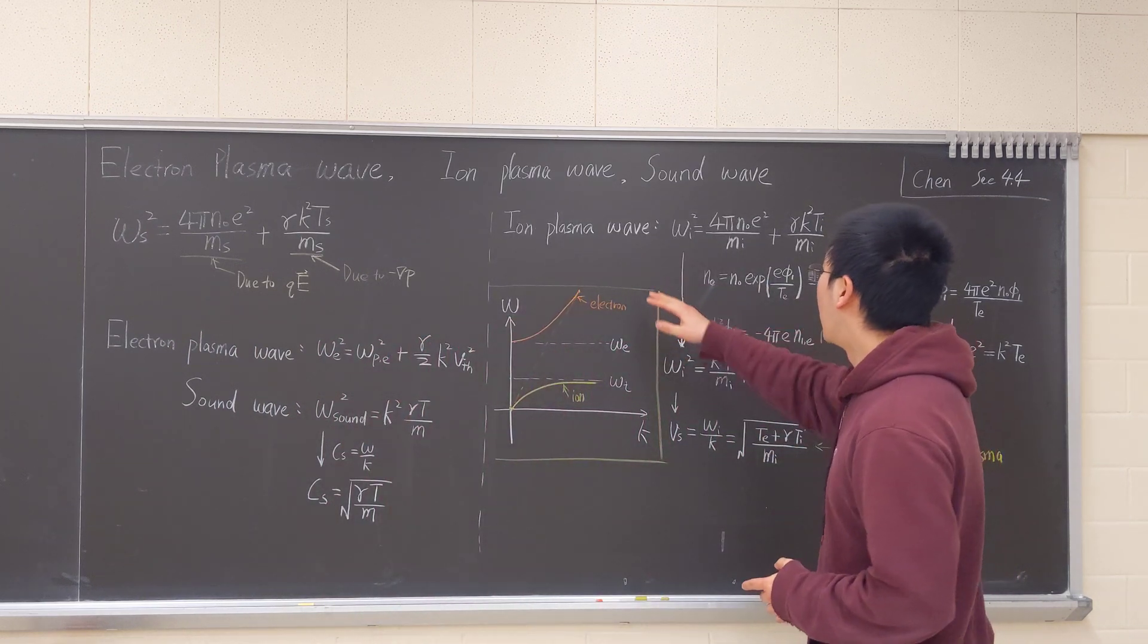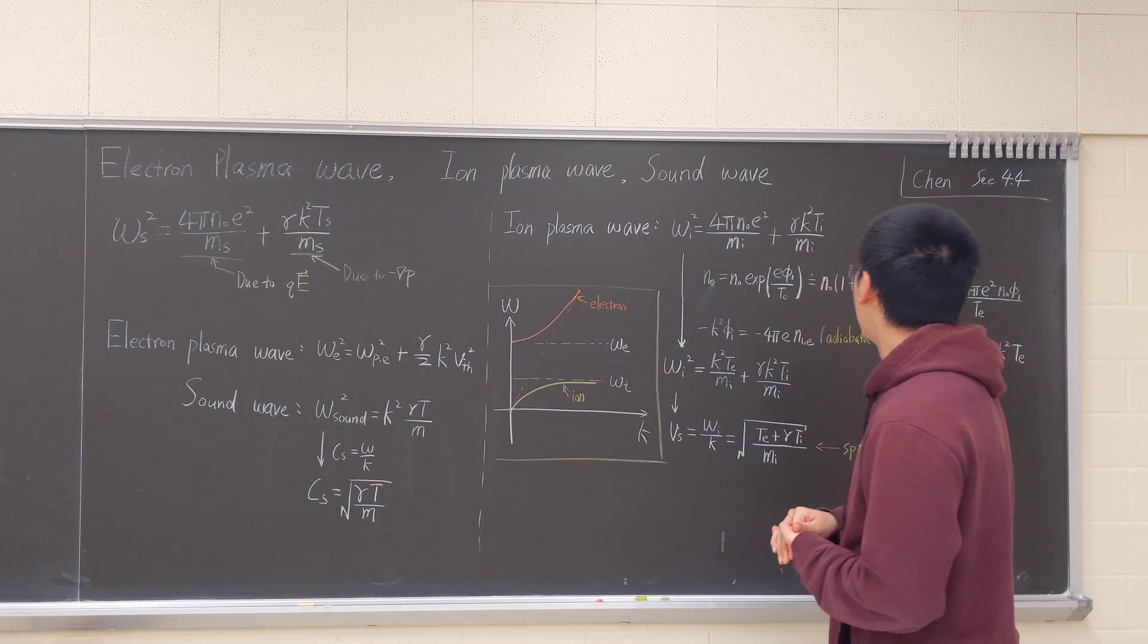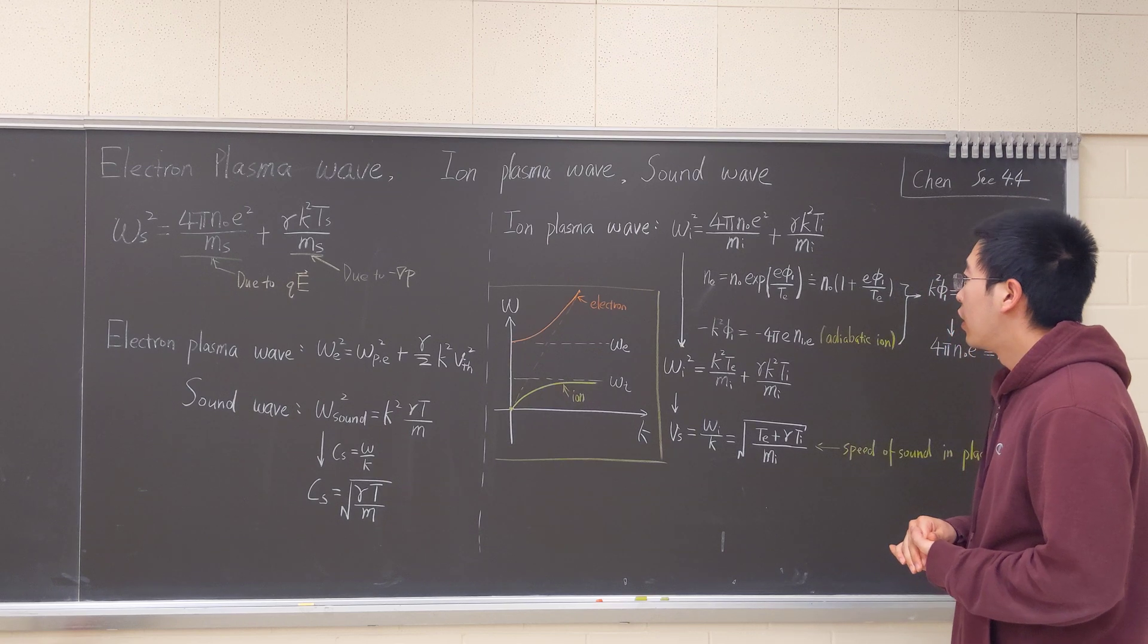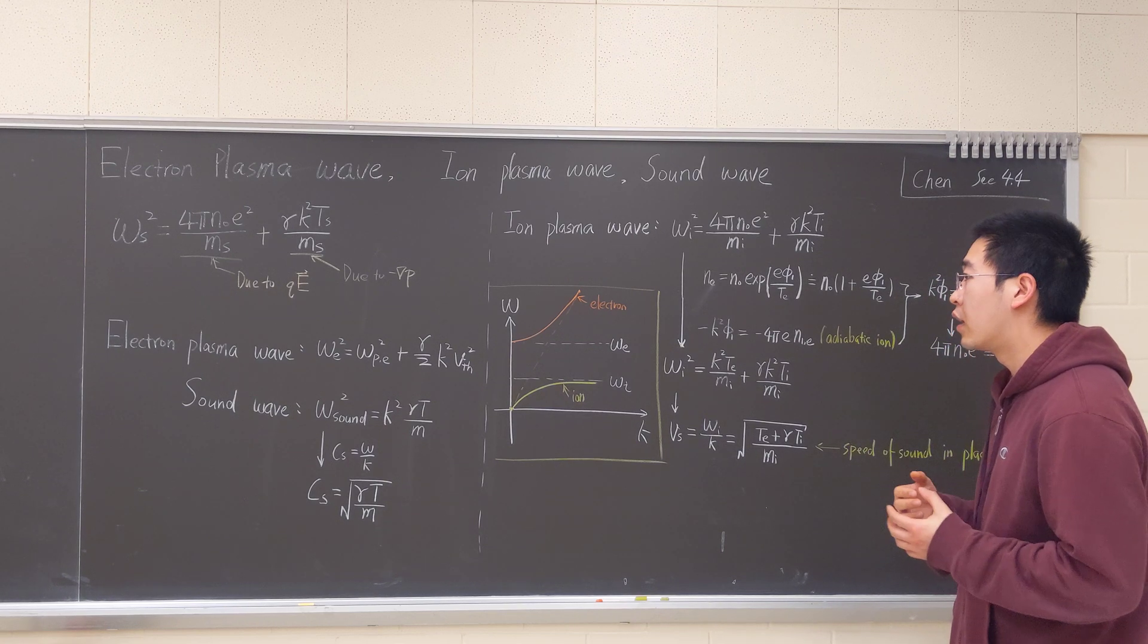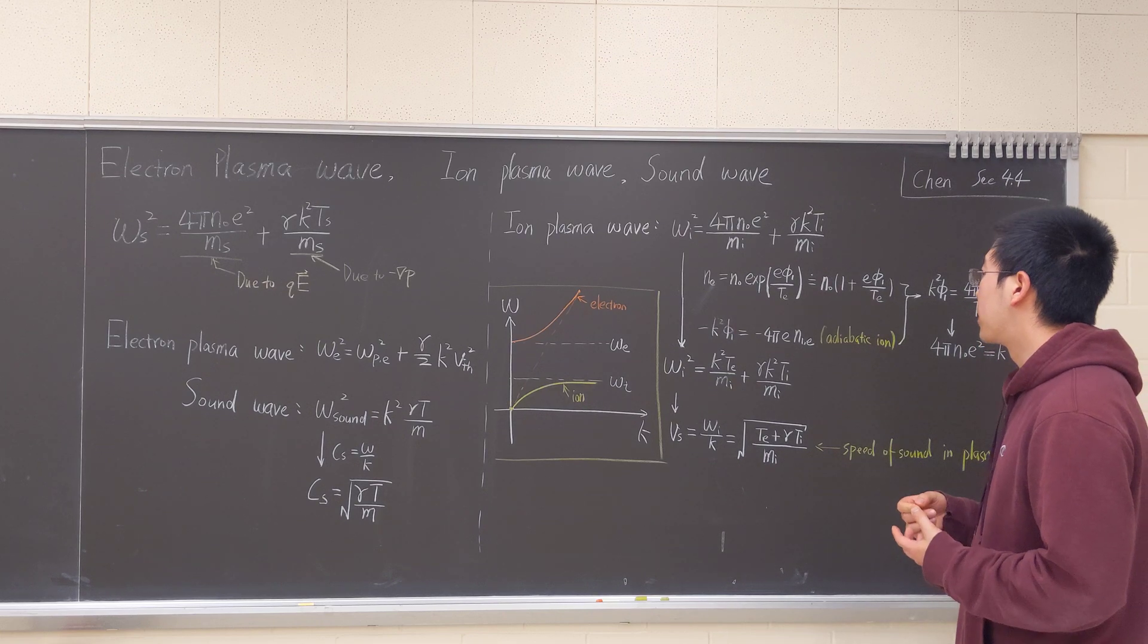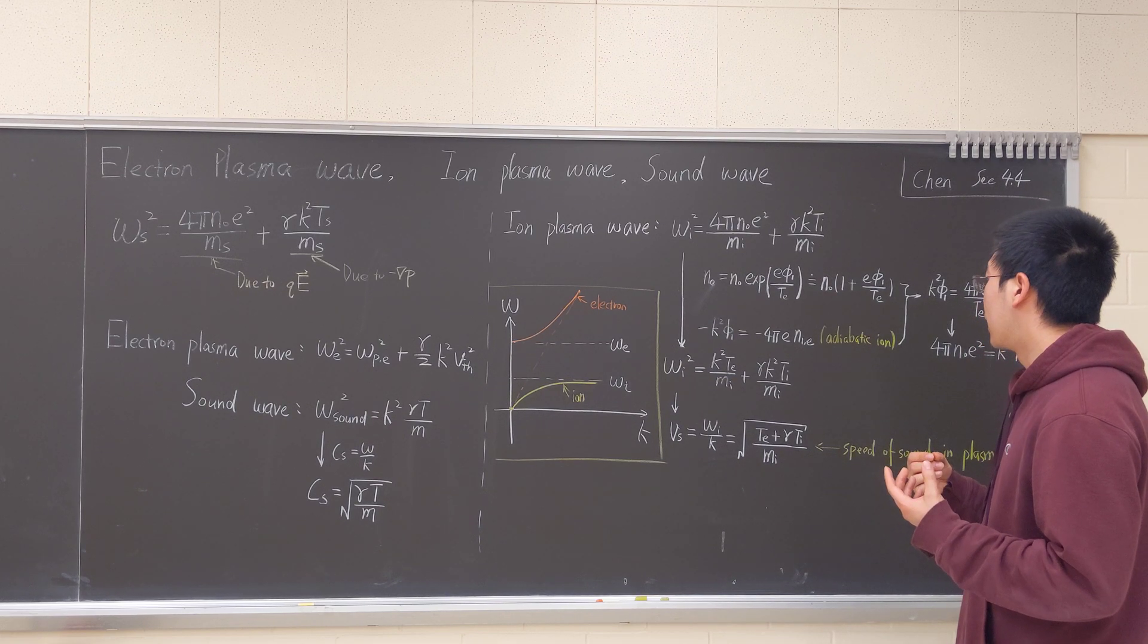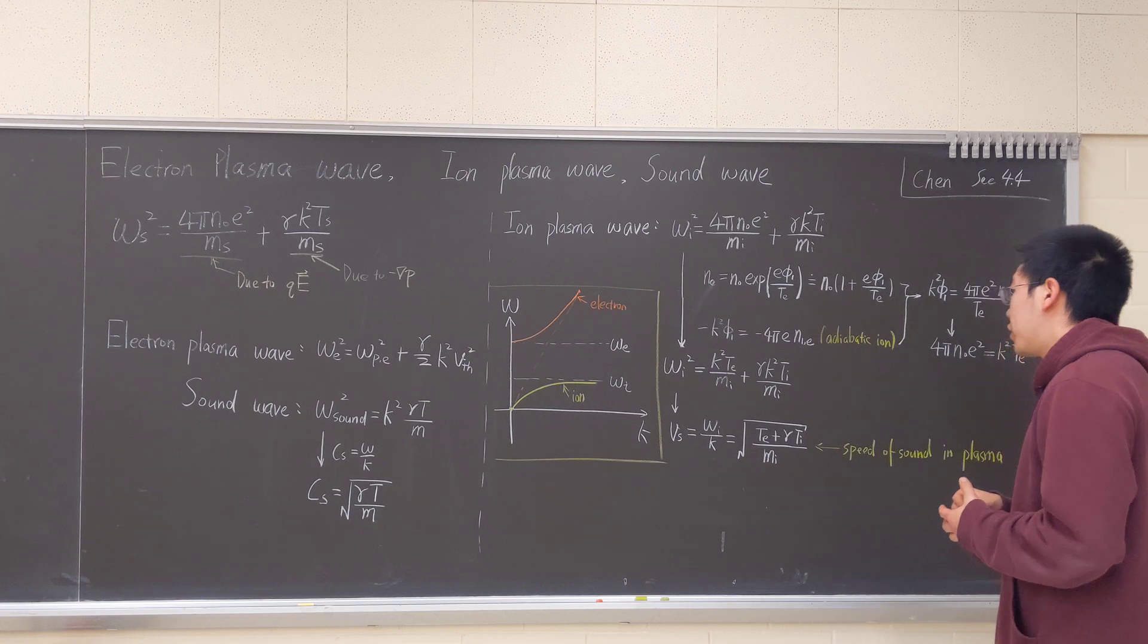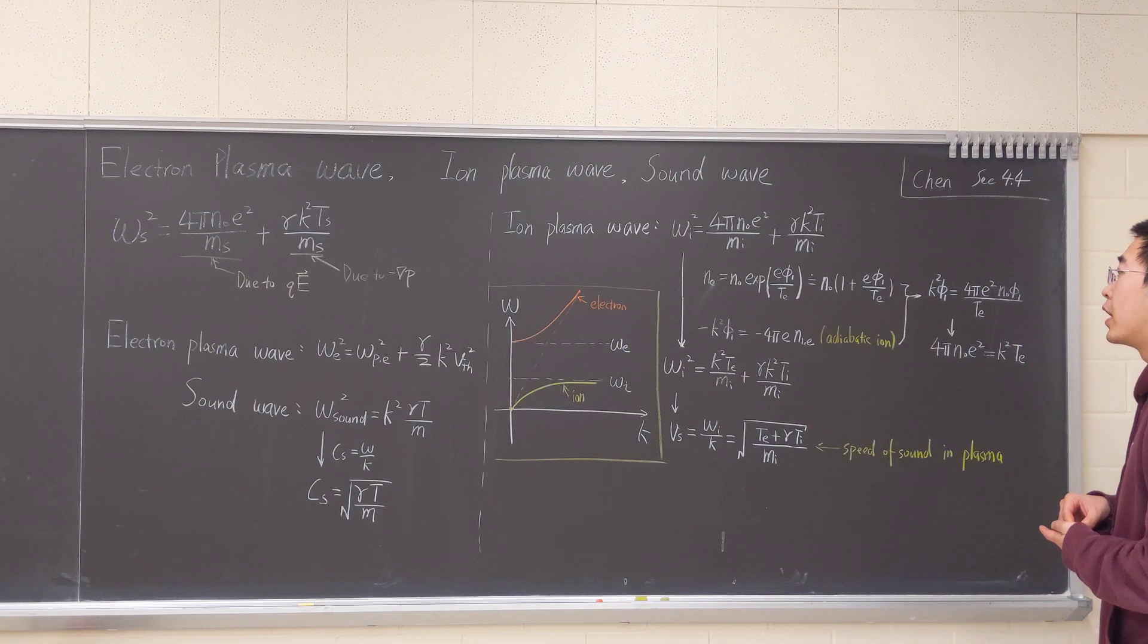And for ion wave, we have an implication because ion is much heavier than electron. So we assume that the electron is, to some extent, adiabatic.